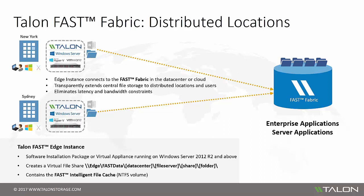Each Fast Edge instance maintains its own unique intelligent file cache, which means all centralized data is available to you, but only caches what's actively used by users in the branch office. This NTFS volume keeps the active dataset close to the users for immediate access to their important files and projects. Because of the integration with the NTFS file system, the cache is simple to manage and can quickly be scaled up to meet the needs of a growing distributed office.